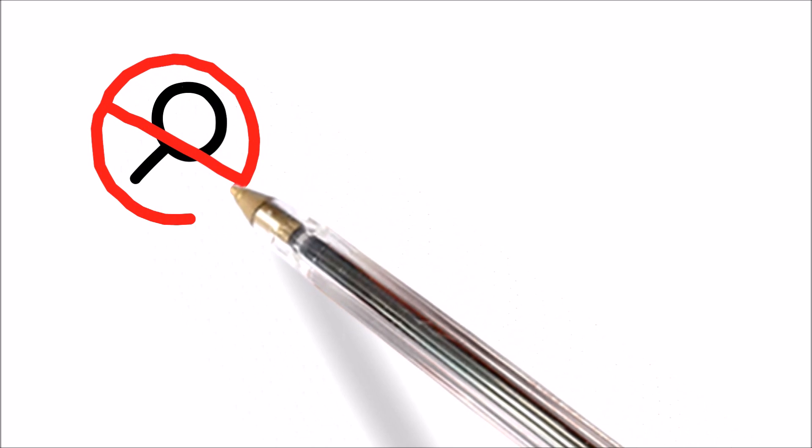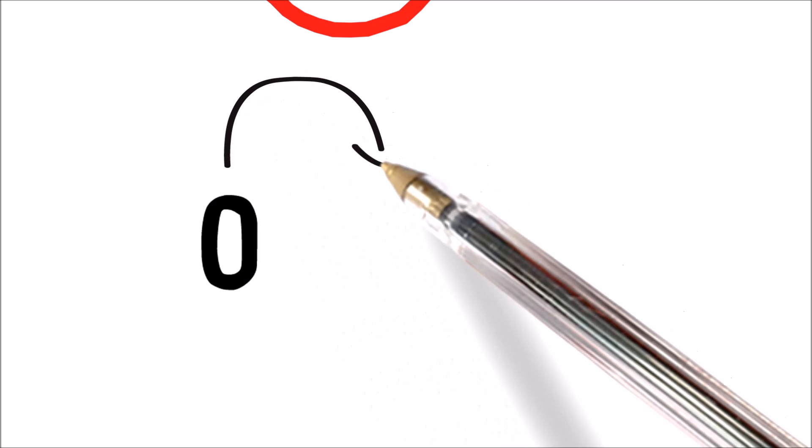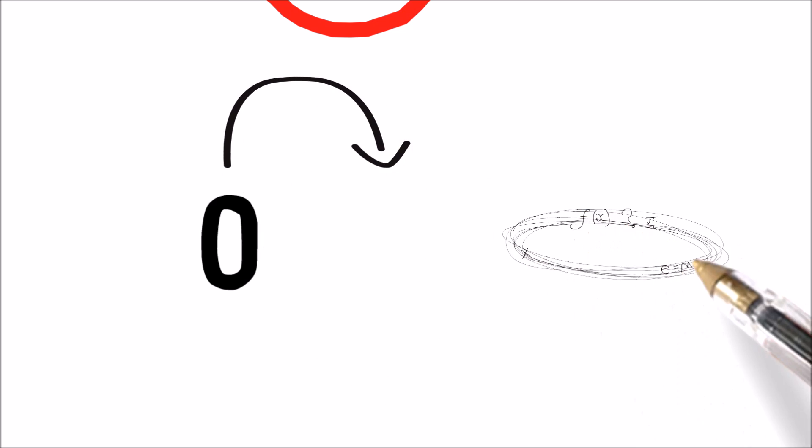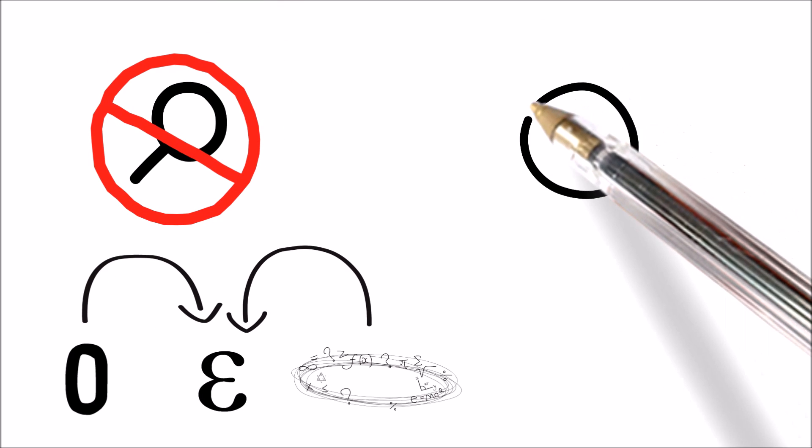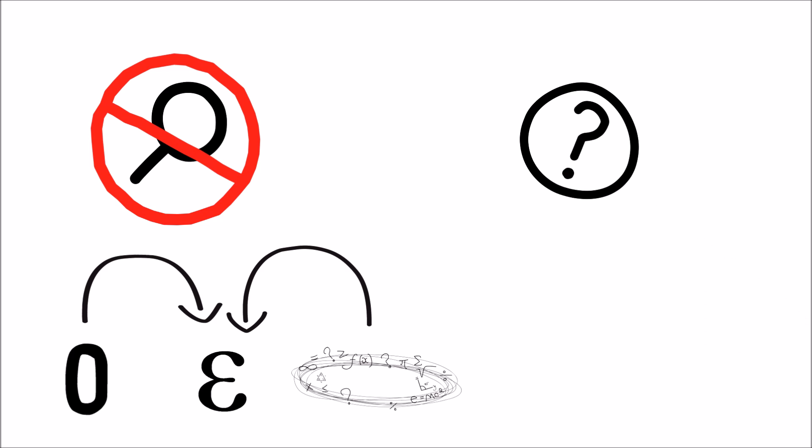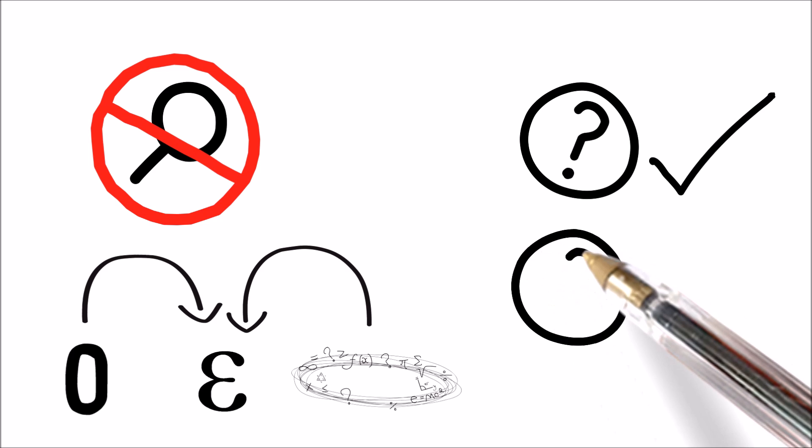An infinitesimal is a number so small that it cannot be measured. A number that is larger than 0, but smaller than all positive real numbers. Infinitesimals answer a lot of questions, like why 0.999 repeating forever equals 1. They are also used in the majority of calculus, and explain thousands of paradoxes. But they also raise a lot of questions.